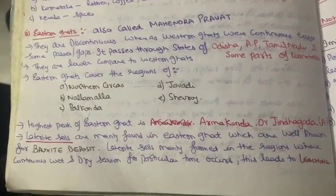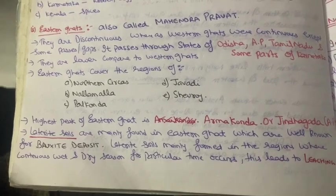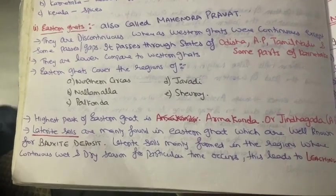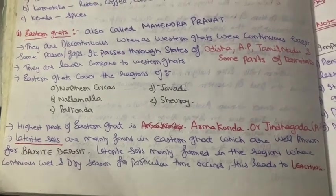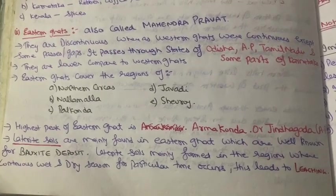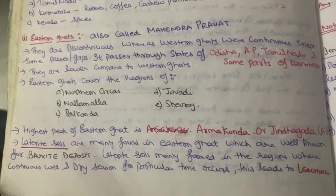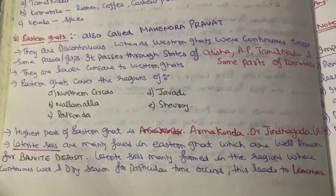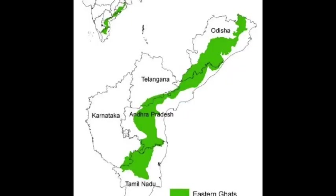First of all, Eastern Ghats lies to the east of the Indian Peninsula, and it is parallel to the Eastern Coastal Plains. It lies to the west of the Bay of Bengal. The states through which Eastern Ghats passes are Odisha, Andhra Pradesh, Tamil Nadu, and some parts of Karnataka.